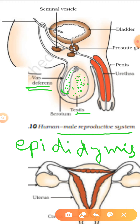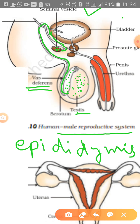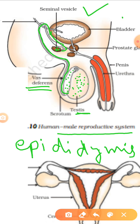Then sperms are carried with the help of a long tube known as vas deferens. Vas deferens carries the sperms to the abdominal cavity, goes on the back side of the urinary bladder, and then enters a sac-like structure called seminal vesicles. There are two seminal vesicles, as there are two testes, and both vas deferens end in the seminal vesicles.